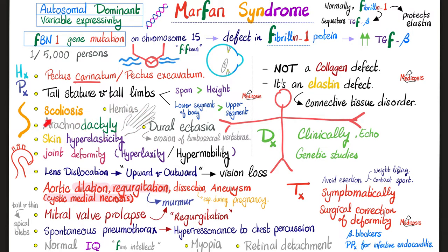Dactyly means digits; arachno refers to arachnid, like a spider. Dural ectasia — dilation of the dura mater (one of the three meningeal layers: dura mater, arachnoid mater, pia mater) — leads to erosions of the lumbosacral vertebrae. The skin and joints are hyperelastic and not very stable because of the elastin defect in the connective tissue.